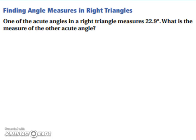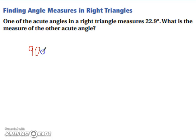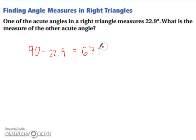Let's find angle measures in right triangles. One of the acute angles in a right triangle measures 22.9 degrees. What is the measure of the other acute angle? Since it's a right triangle, the two acute angles must add up to 90. So we have 90 minus 22.9, which gives us the other acute angle: 67.1 degrees.